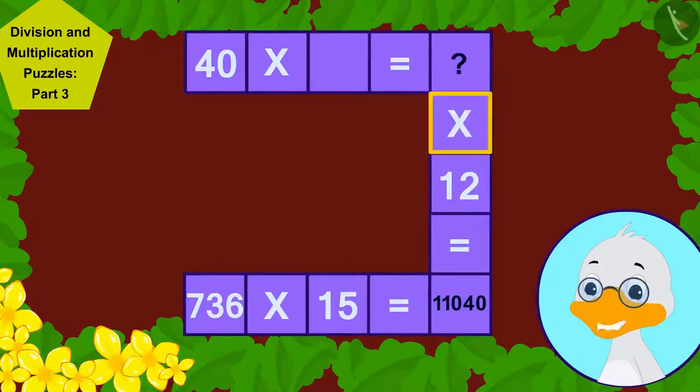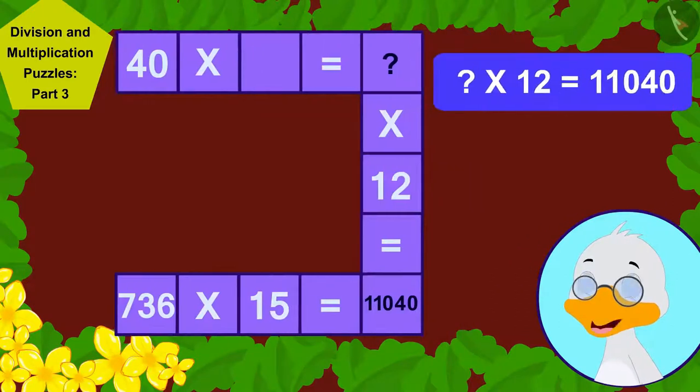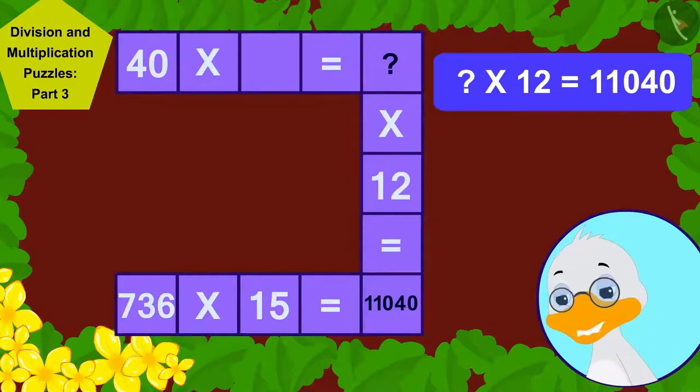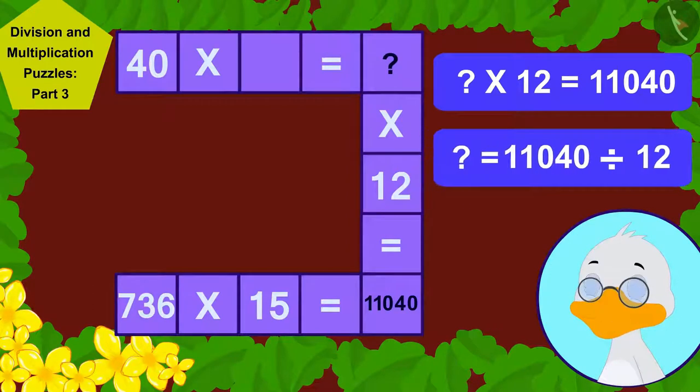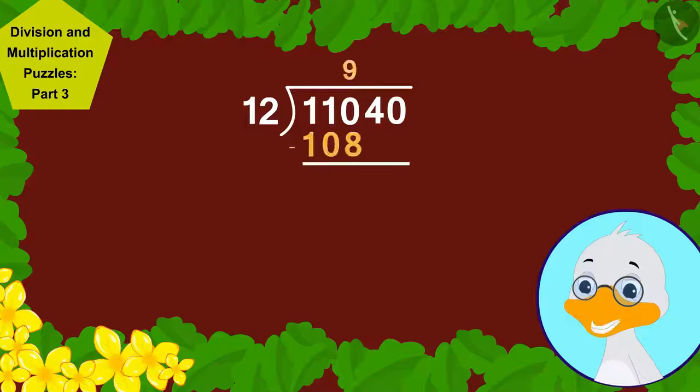which when multiplied by 12 gives the answer 11,040. And as we know, we can write any multiplication as a division. So, I divided 11,040 by 12 to fill this blank.